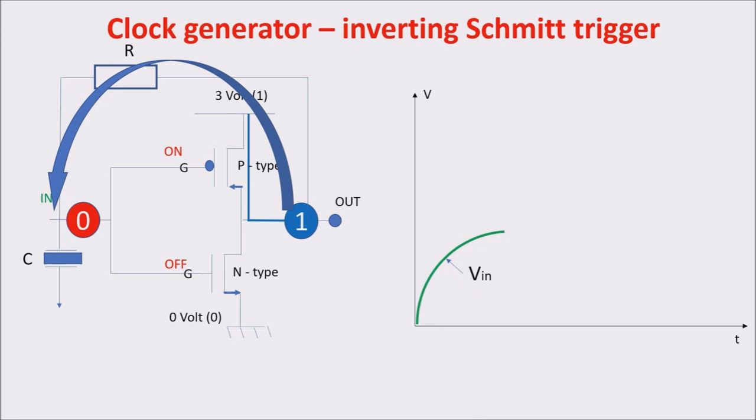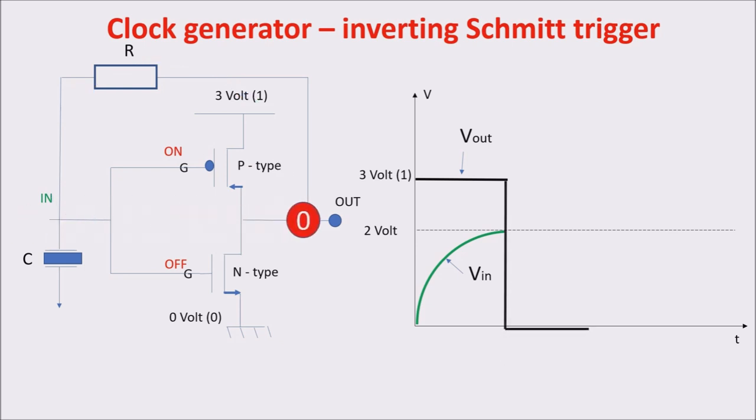The input voltage increases and the output voltage stays at 1 or 3 volts in our example. When the input voltage reaches the threshold voltage of the N-type transistor, 2 volts in this example, this last turns ON and the output goes to 0, starting to discharge the capacitor through the N-type transistor.